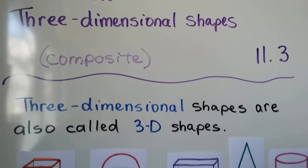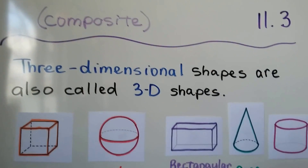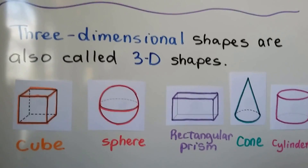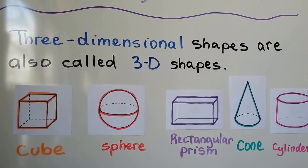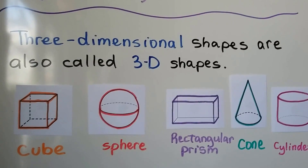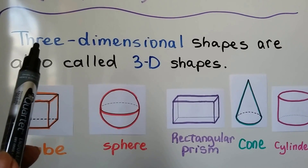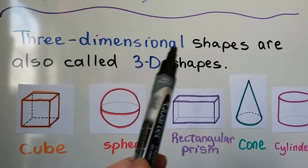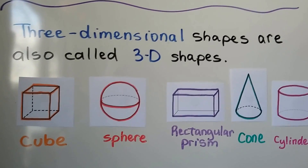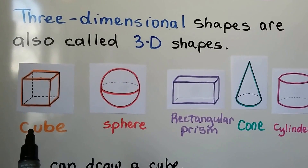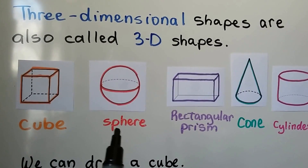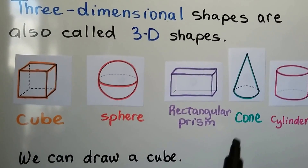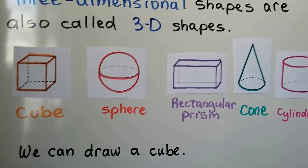We've been learning about three-dimensional shapes, and we know they're also called 3D shapes. We use the number three for the word three, and the D for dimensional. We've been learning about the cube, the sphere, the rectangular prism, the cone, and the cylinder.